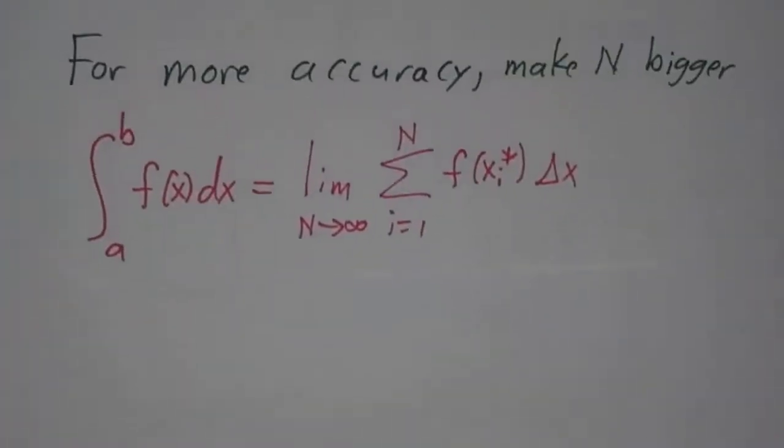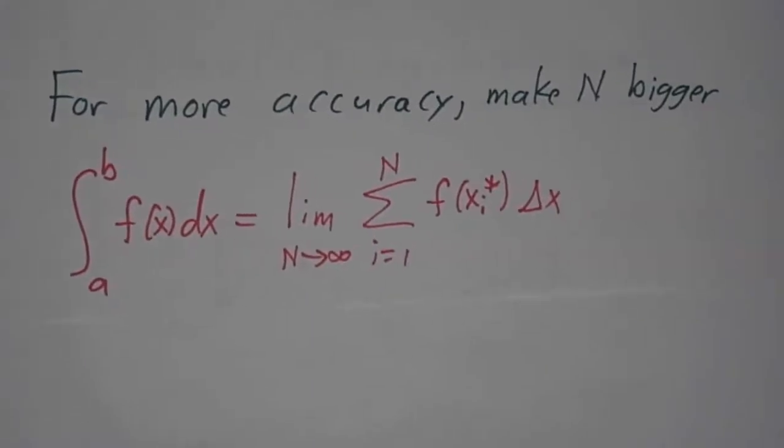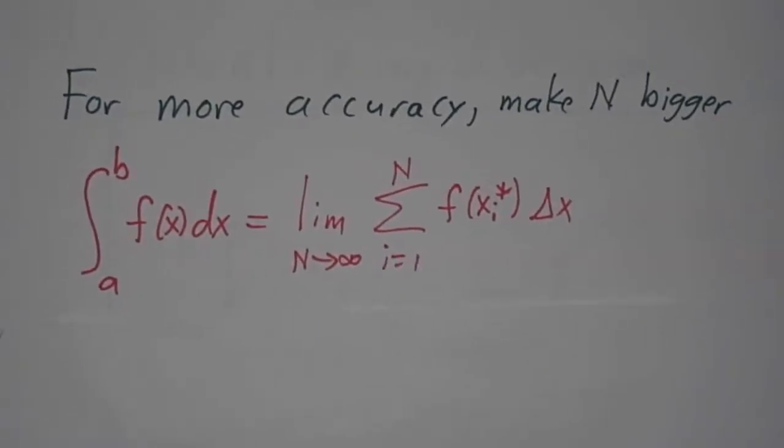And if we want more accuracy, we use more pieces, and more pieces, and more pieces, and eventually the exact answer is the limit as the number of pieces goes to infinity. And we call that a definite integral.